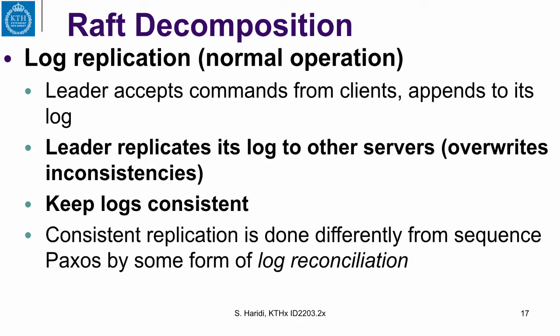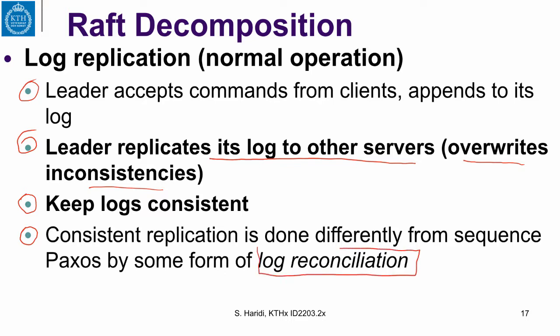A leader then moves to what we call normal operation. In this case, the leader accepts commands from clients and appends them to its log. The leader replicates its log to other servers. This is more complicated than it sounds, because the log of the leader and the log of the other servers might be inconsistent, so it has to overwrite inconsistencies. We are going to see exactly how this is done. Consistent replication is done differently from sequence Paxos by some form of log reconciliation.